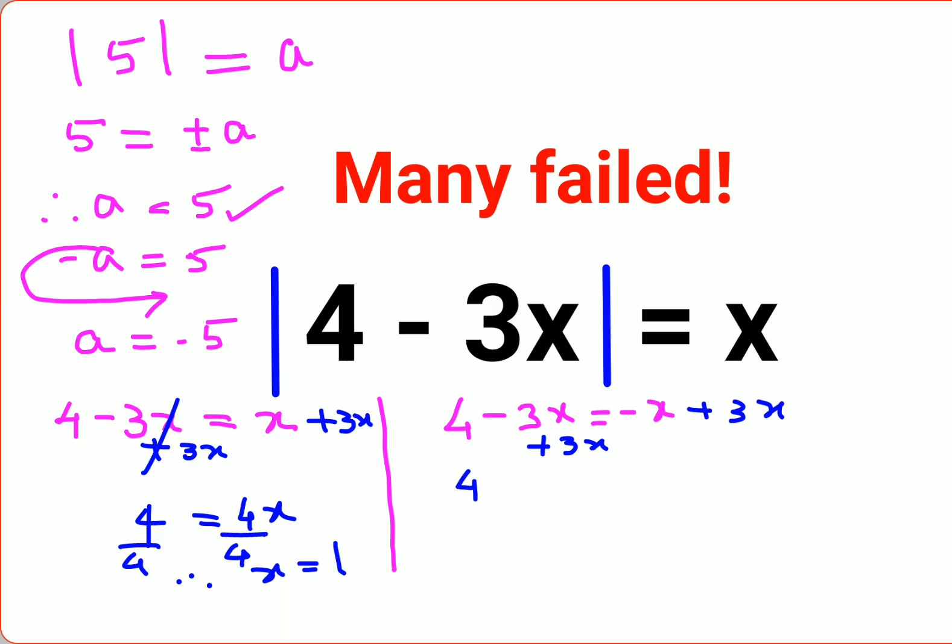Similarly here, we get 4 minus 3x plus 3x which cancels, and then you have minus x plus 3x that gets you 2x. In order to find the value of x, you need to divide both sides by 2. This cancels and I can say therefore x value is just 2. So we can say either the value of x is 2 or the value of x is 1.